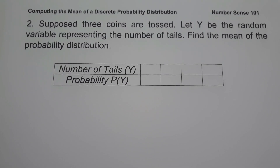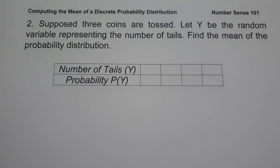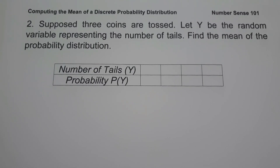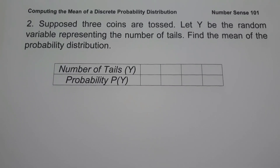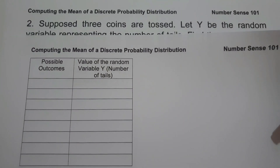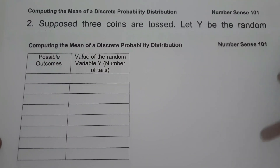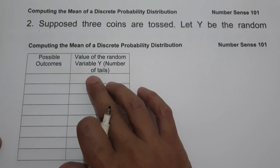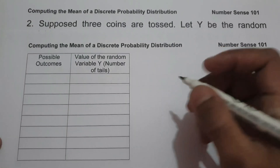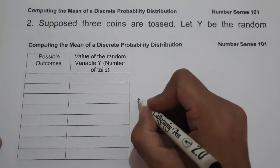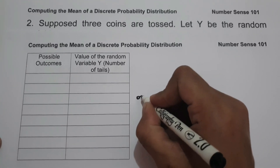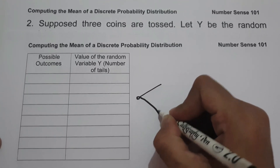On example number 2: Suppose 3 coins are tossed. Let Y be the random variable representing the number of tails. Find the mean of the probability distribution. To find the mean, let us first identify all the possible outcomes. We have a given table showing the possible outcomes and the random variable Y, which is the number of tails. To complete this, let us use a tree diagram to determine all the possible outcomes.